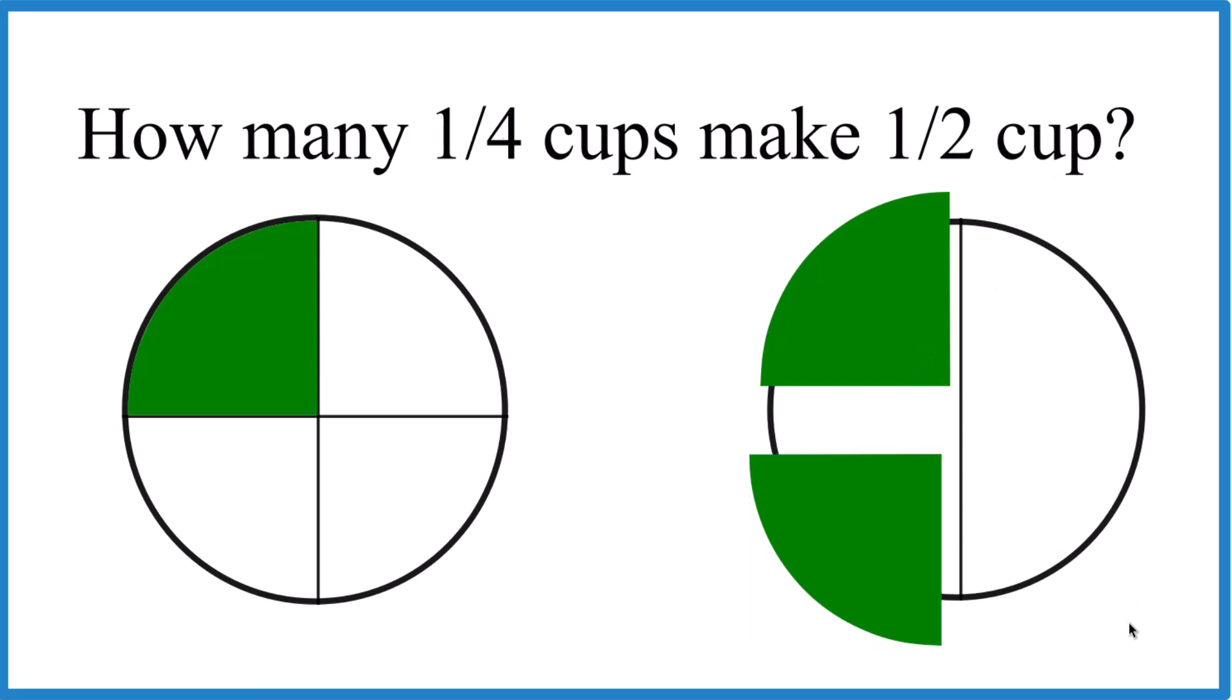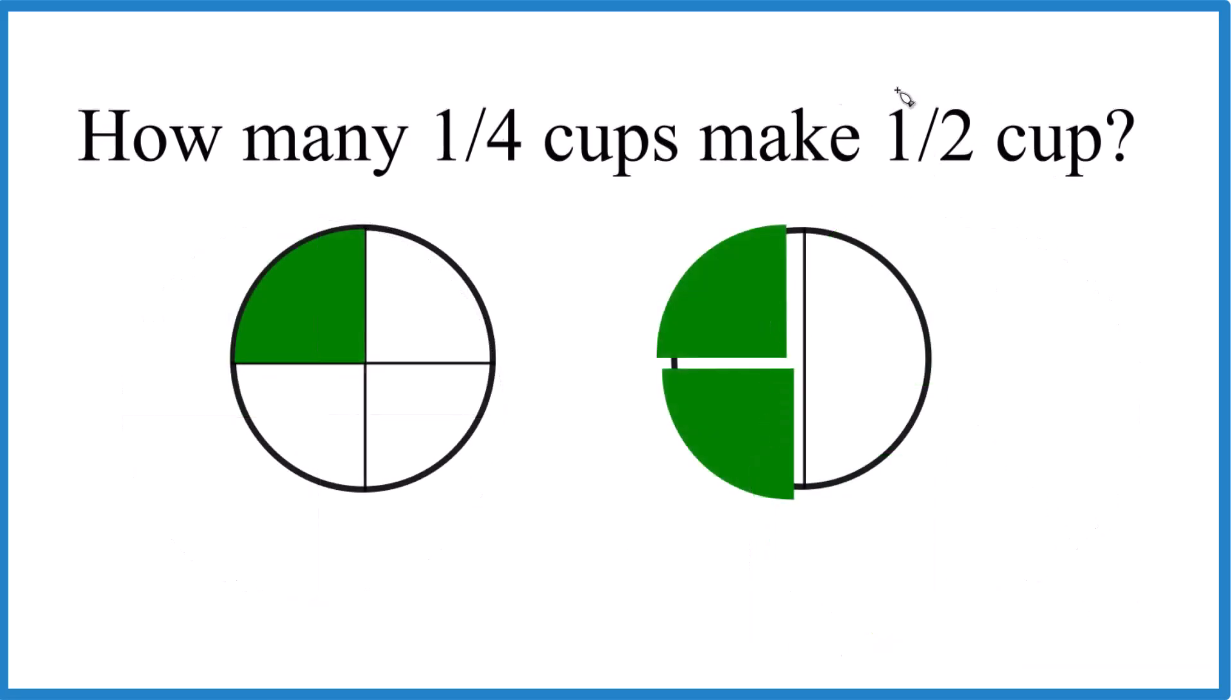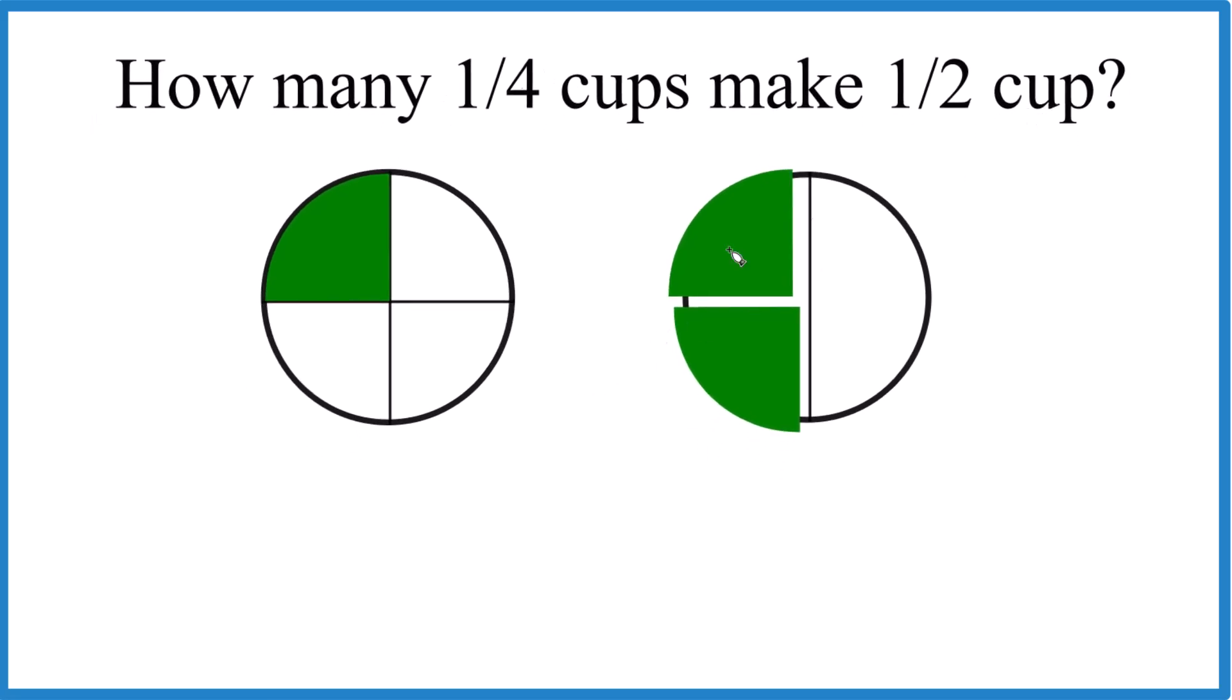Here's the more mathematical way to do it. Basically, we're saying, how many times does one fourth go into one half? So we're taking one half, and we're just dividing that by one fourth.